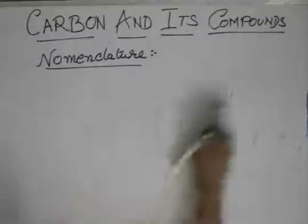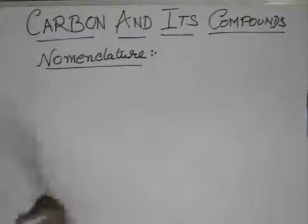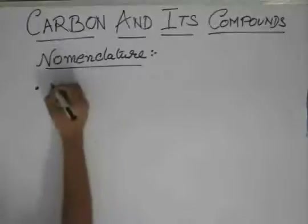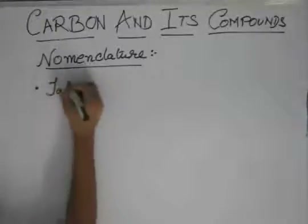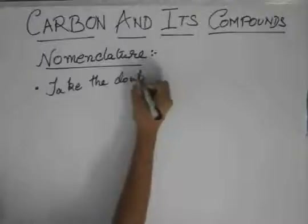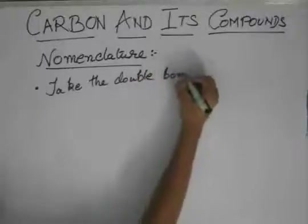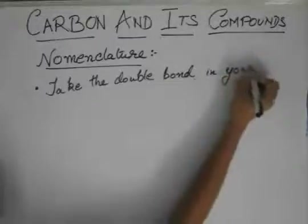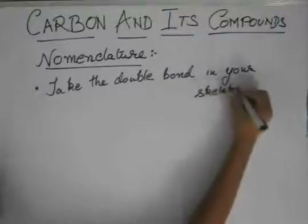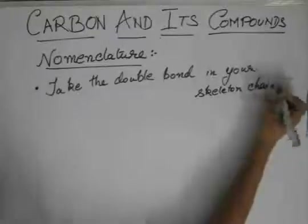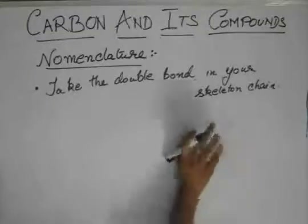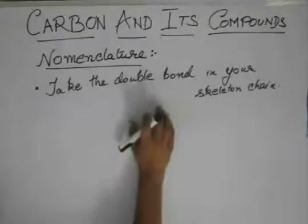In alkenes, there is one very basic rule: take the double bond in your skeleton chain. This rule somewhat defies the longest chain rule, because there is a double bond.